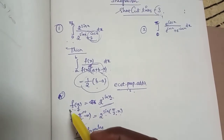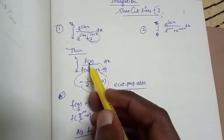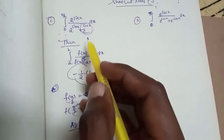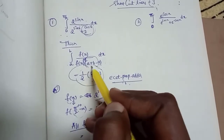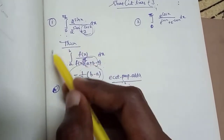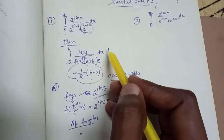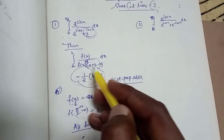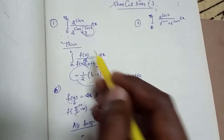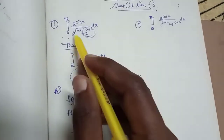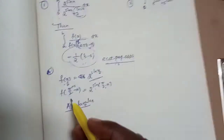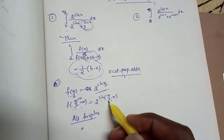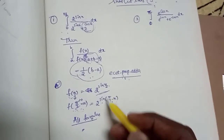So f of x is equal to 2 power sin x. Now applying the formula, f of a plus b minus x: here a is 0, b is pi by 2, so a plus b minus x equals 0 plus pi by 2 minus x, which is pi by 2 minus x. So we get 2 power of sin of pi by 2 minus x.